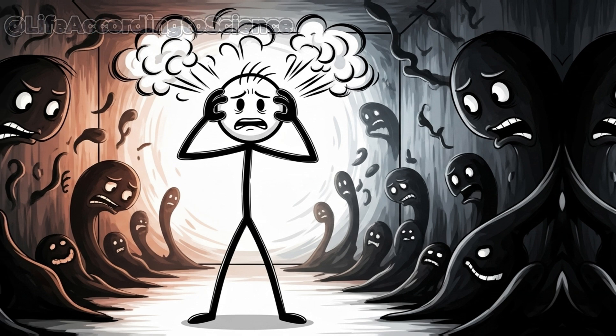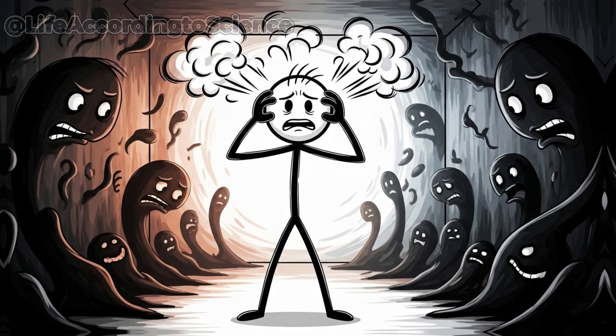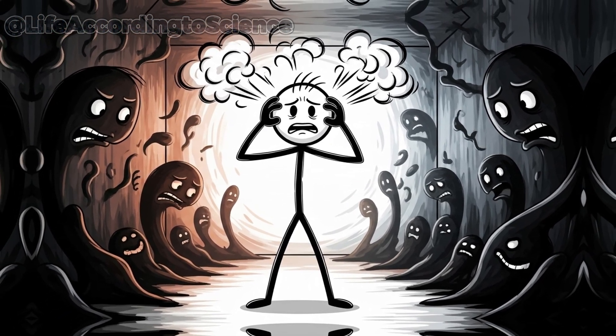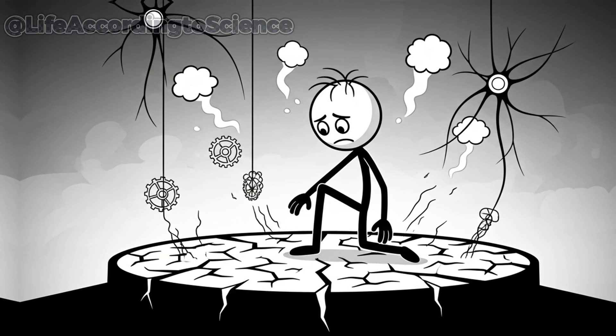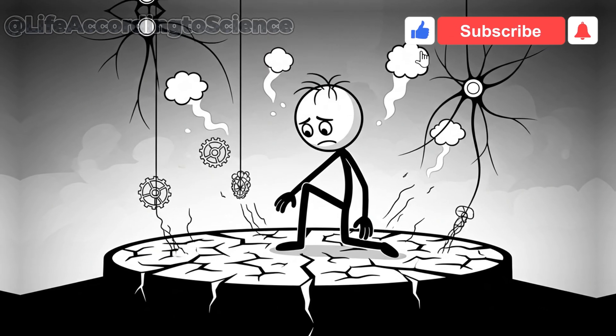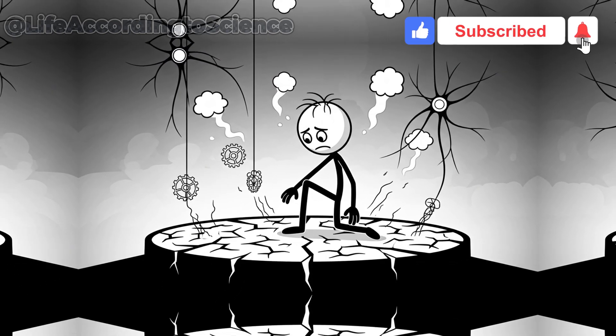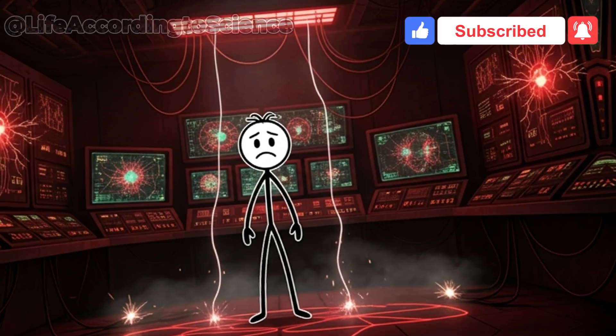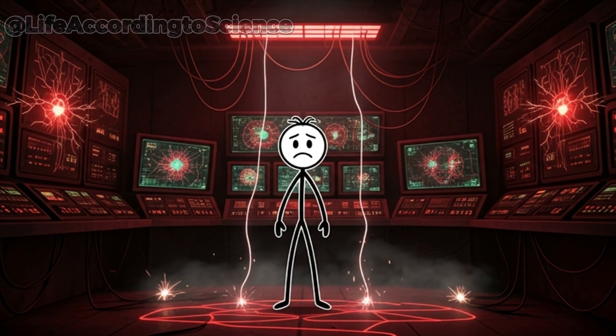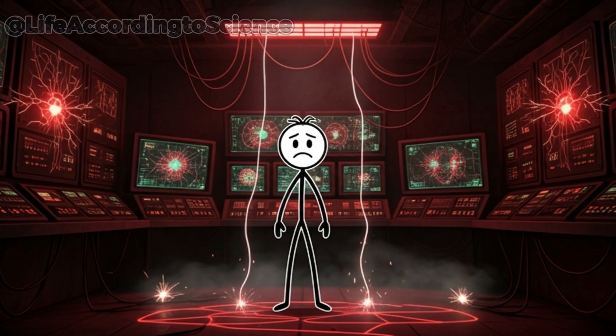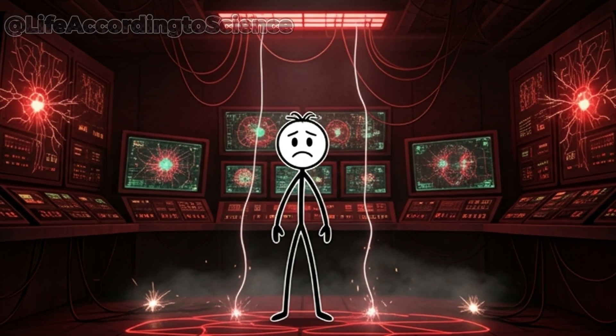Studies show that severe dehydration can shrink brain tissue temporarily, affecting memory and emotional control. Your mood changes drastically—irritability, anxiety, and even mild panic can surface. That's your brain trying to make sense of an emergency it can't fix. By now, dehydration isn't a simple lack of water. It's a full-blown internal crisis. The brain, the organ that controls everything, is losing its rhythm. And the next system to falter? Your heart.